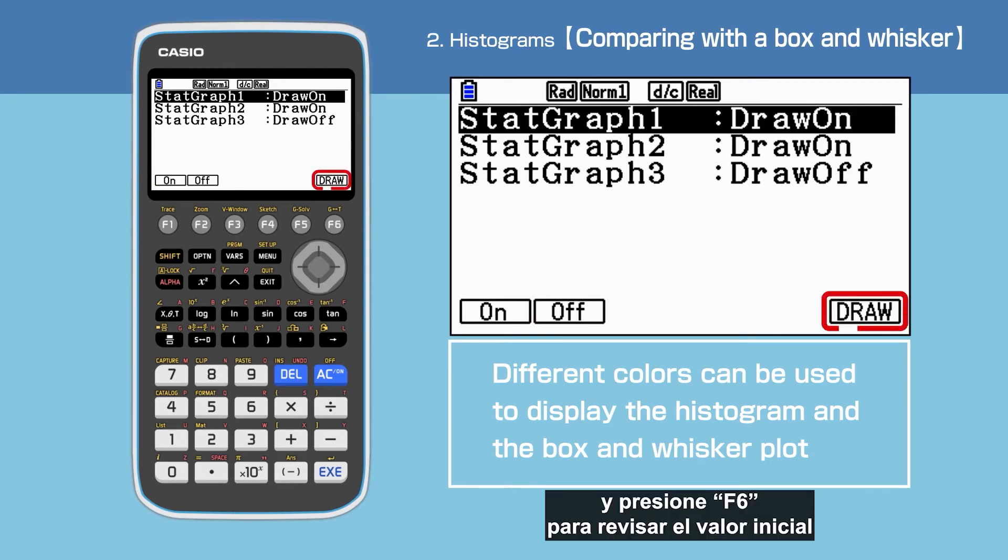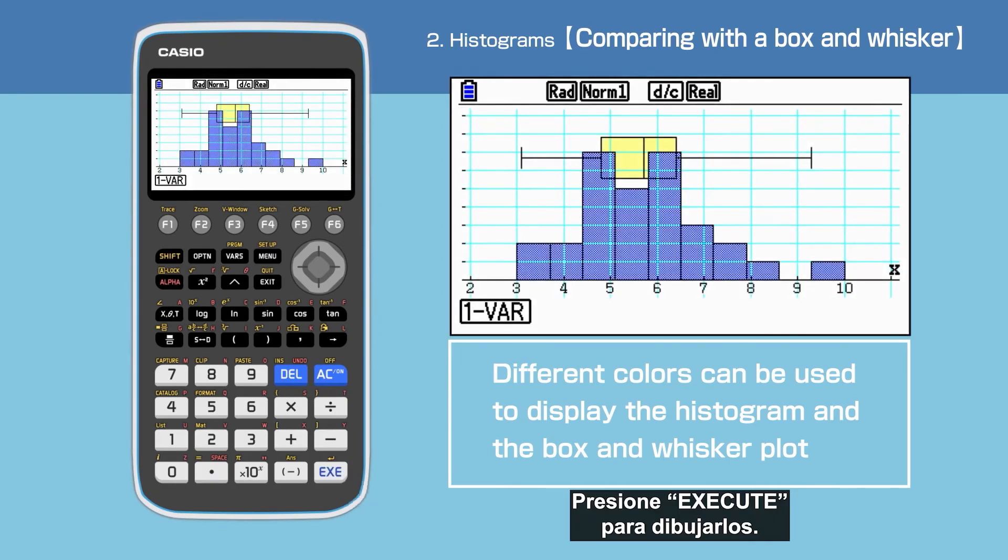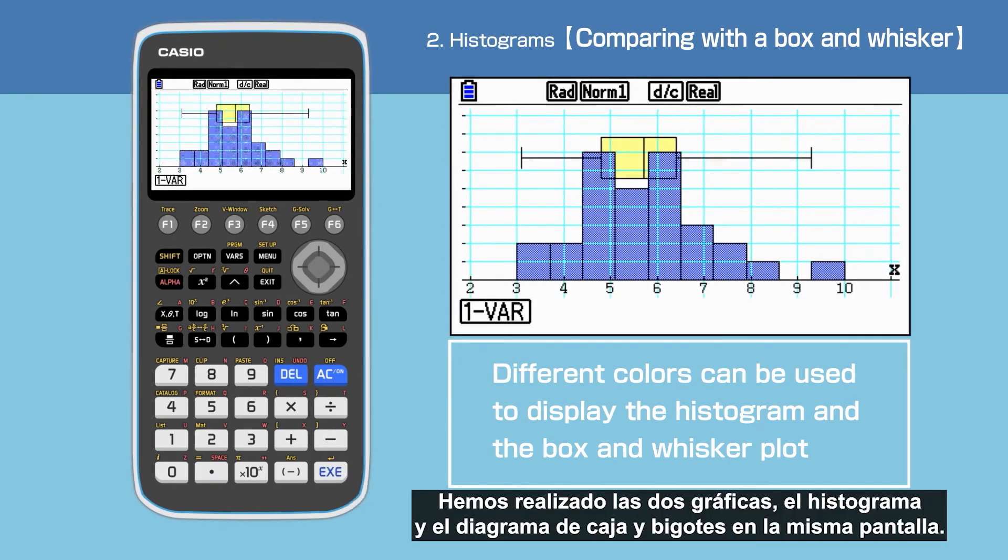Pressing F6 will let us check the starting value and the width of the histogram. Press Execute to draw. We have now displayed both the histogram and the box and whisker plot on the same screen.